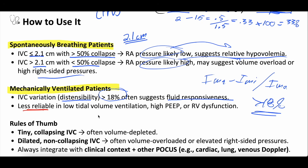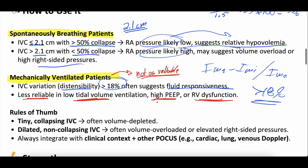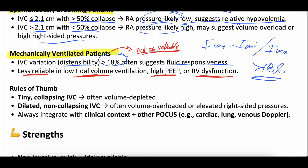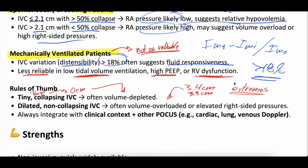In mechanically ventilated patients, IVC assessment is less reliable, especially with low tidal volume ventilation, high PEEP, or RV dysfunction. So use the distensibility index in vented patients, but even then it's not as reliable as in spontaneously breathing patients. Rules of thumb here, similar to CVP: the extremes are probably meaningful. A super small IVC — say 0.8 centimeters collapsing to zero — that patient is probably volume depleted. Whereas a 3.4 centimeter IVC that barely collapses probably indicates volume overload. At the extremes, it's fairly helpful as a surrogate for volume status.